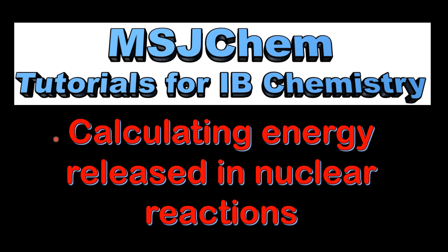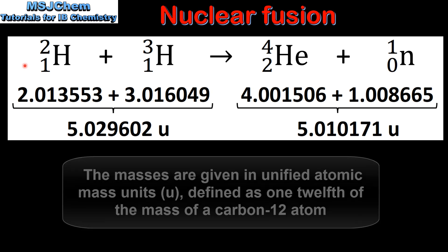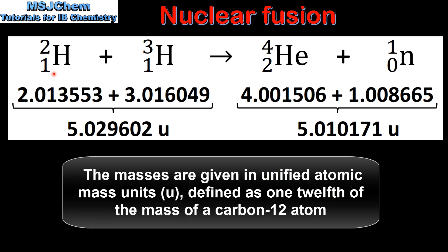This is MSJChem. In this video I'll be looking at calculating the energy released in nuclear reactions. We'll start by looking at a nuclear fusion reaction. In this reaction two isotopes of hydrogen, that's deuterium and tritium, react together to form helium and a neutron.